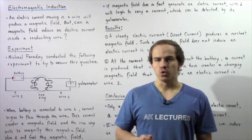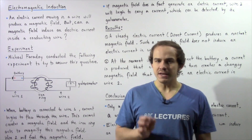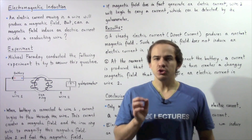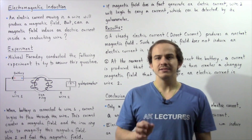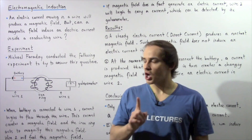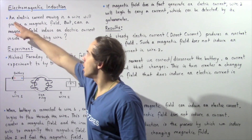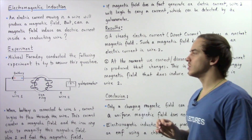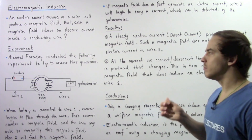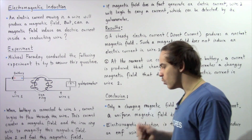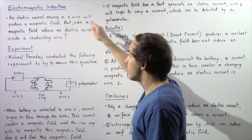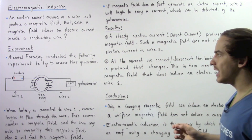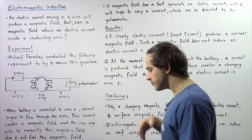Now, is the opposite true? Can a magnetic field that is present around a wire induce an electric current inside that wire? We saw that an electric current moving inside a conducting wire will produce a magnetic field around that wire — but can a magnetic field induce an electric current inside a conducting wire?